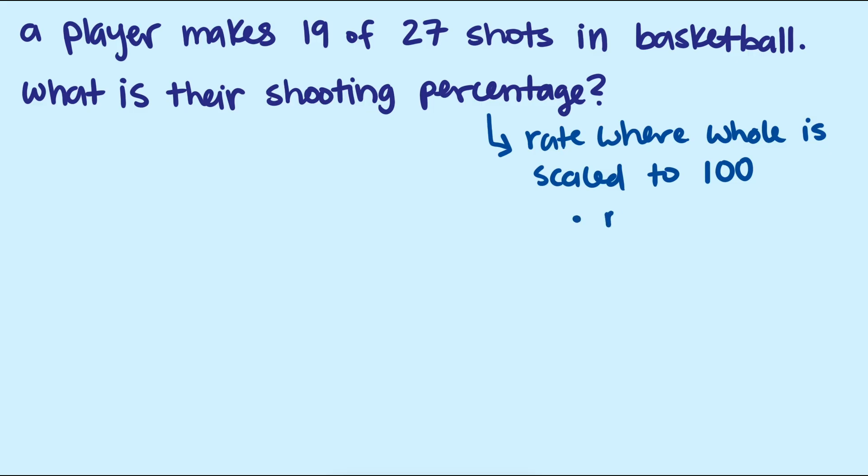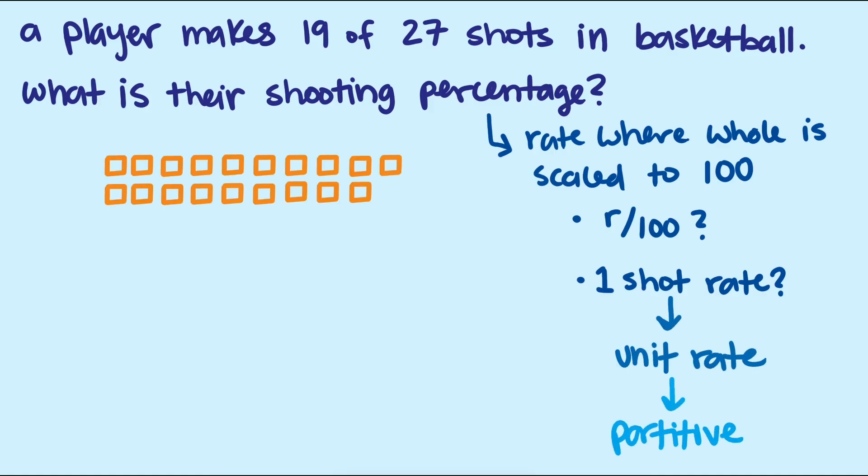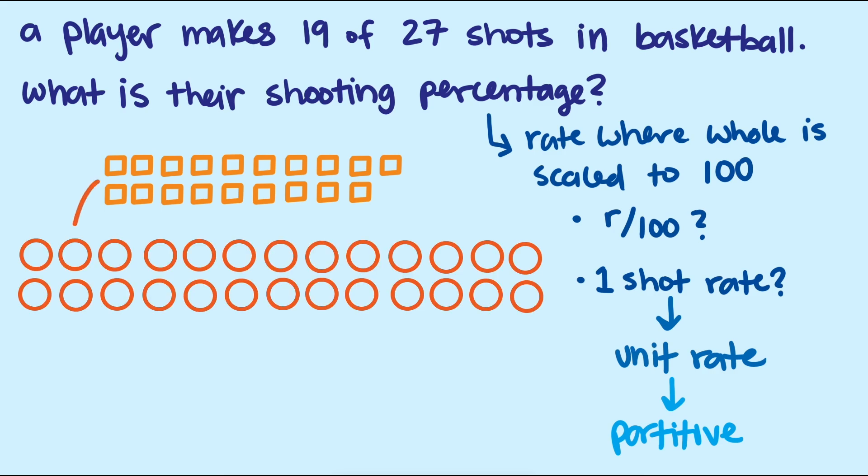Percentages are a rate where the whole is scaled to 100. So the answer to a percentage question is, what is the rate for every 100? Well, to start off, we can find the rate for one shot and scale that up to 100. How many baskets did the person make per shot on average? We are after a unit rate here, so division makes sense from a partitive perspective. We evenly distribute the 19 makes across the 27 attempts. That's fair sharing. And we get 19 27ths, which is about .7037.